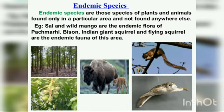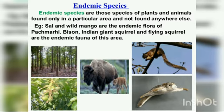Some examples of endemic species: trees like sal and wild mango come under endemic species. For animals, examples include bison, flying squirrel — the squirrel which has a big fluffy tail, it is very big in size — and giant squirrel, which is also one type of squirrel. These all come under endemic species.